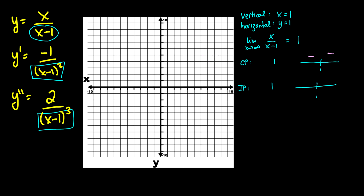For inflection points, picking zero gives negative one cubed which is negative one, and two divided by negative one gives a negative value. Picking a value greater than one gives a positive value. So below x equals one the function is concave down, and above x equals one it is concave up. We now know a lot about this graph.